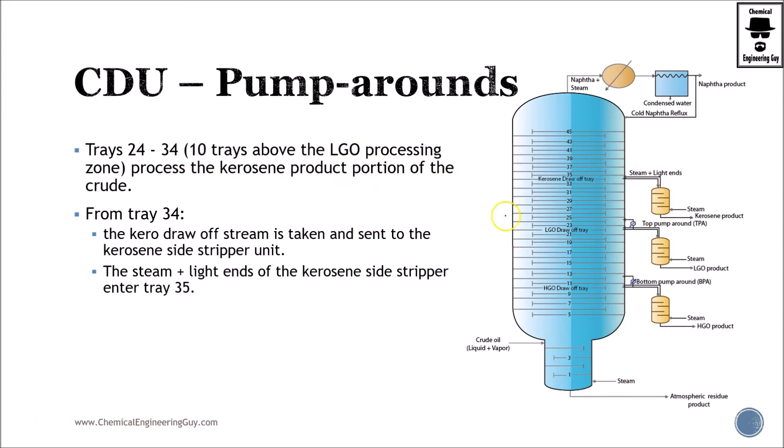Let's talk about now 24, this one right here, up to 34, which is kerosene drawoff. What we're going to do is, once again, we're going to remove this part right here. We have four trays, we add heat, and we reflux this part right here, and the kerosene.